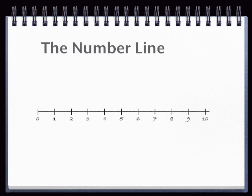Notice that the further we go to the right, the bigger the numbers get. So, on the number line, small numbers are on the left, and large numbers are on the right.